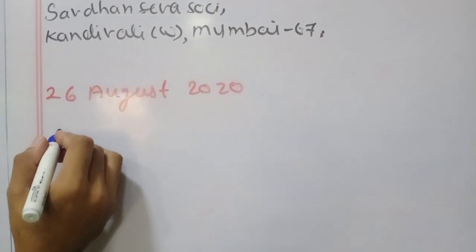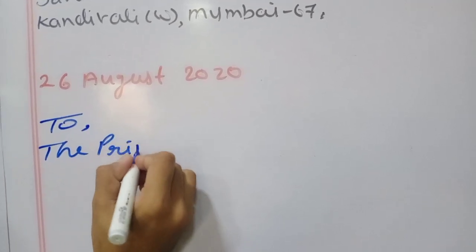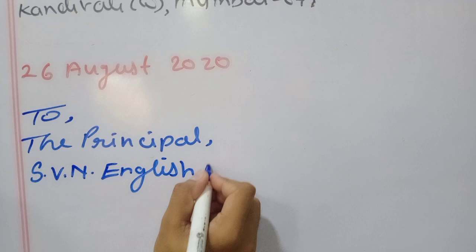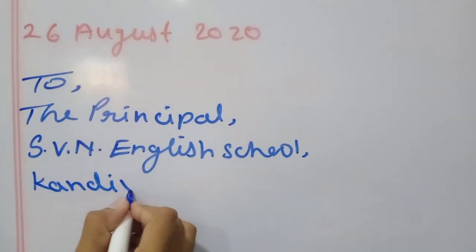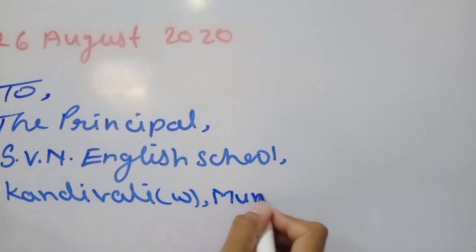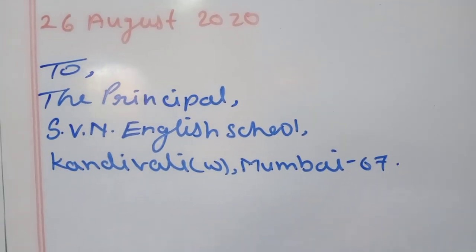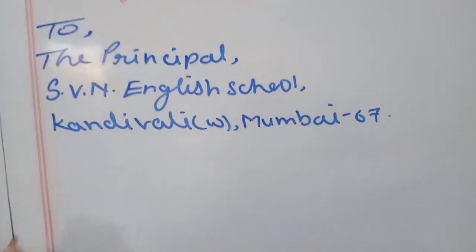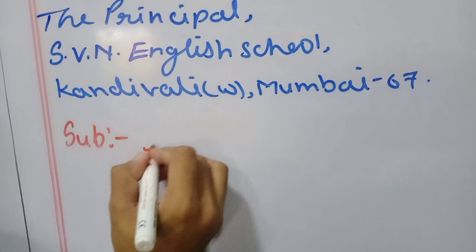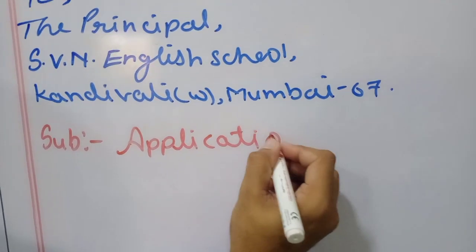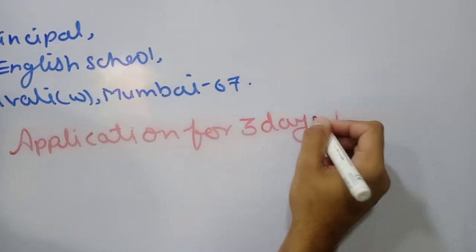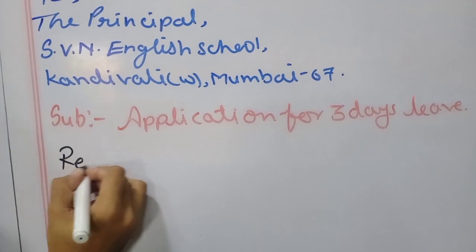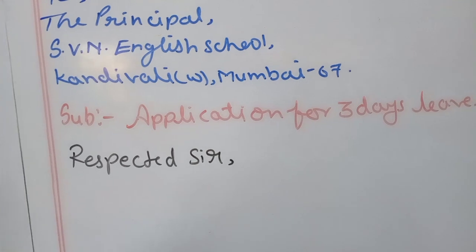After that, to whom we are writing the letter — receiver's name and detail: To the Principal of SVN English School, Kandivali West, Mumbai. This way we have written the sender's detail, date, and receiver's detail. The next step is subject: 'Application for 3 days leave.' We have written the subject. Then salutation — 'Respected Sir,' and put the comma.